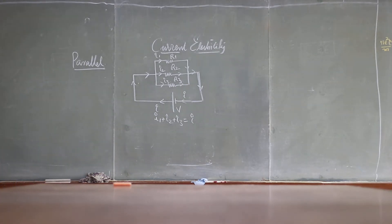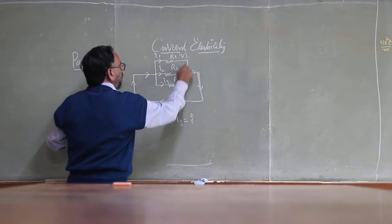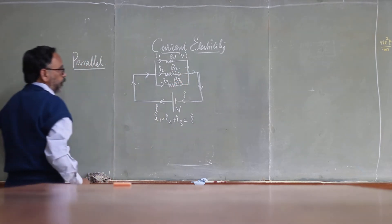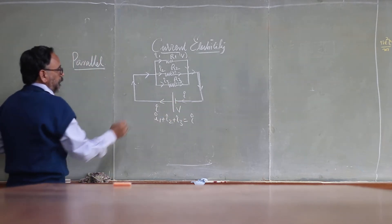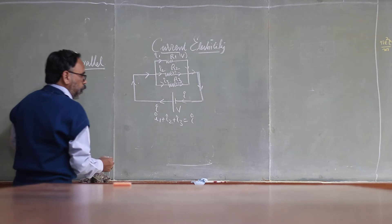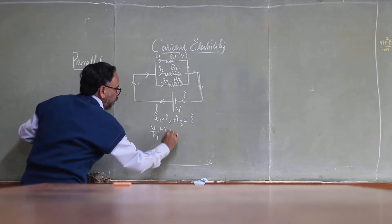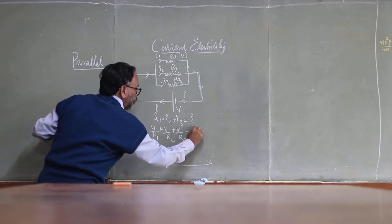Now I1 plus I2 plus I3 is equal to I. Here what is the beauty of this circuit is the potential difference across the first resistor, that is V, and here also V, and here also V. Because all the resistors are connected across the two terminals of the cell. Now according to Ohm's law, we can write V by R1 plus V by R2 plus V by R3. This is all equal to I.